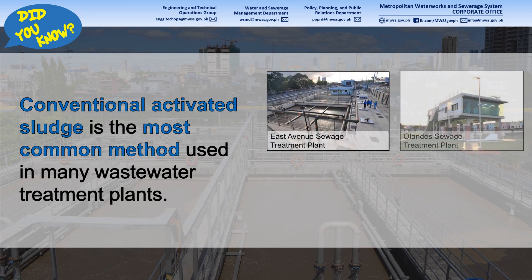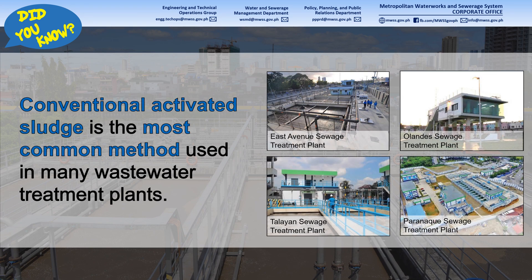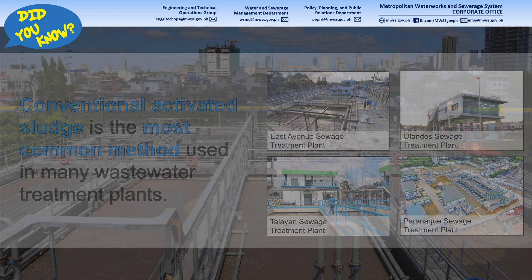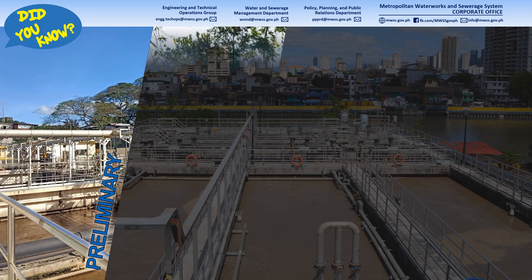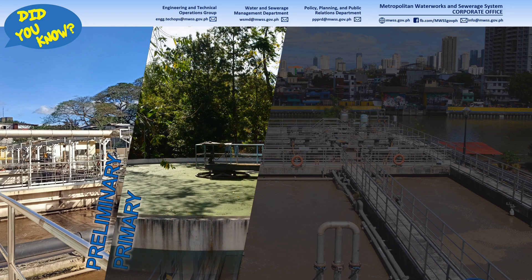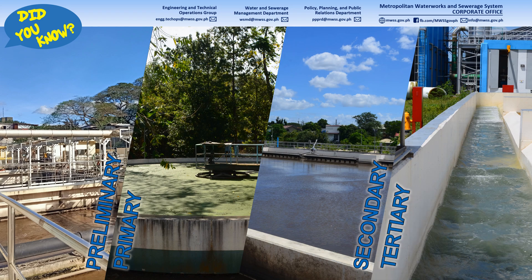Conventional activated sludge is the most common method used in many wastewater treatment plants. Like other treatment technologies, the conventional activated sludge process has four main treatment stages: the preliminary, primary, secondary, and tertiary.